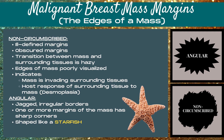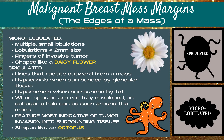One or more margins of the mass has sharp pointed corners. Our next malignant breast mass margin is called micro lobulated. These are multiple small lobulations — rounded projections from a mass — that are less than two millimeters in size. This indicates that there are fingers of invasive tumor trying to spread out into the tissue, and it's shaped like the petals of a daisy flower.